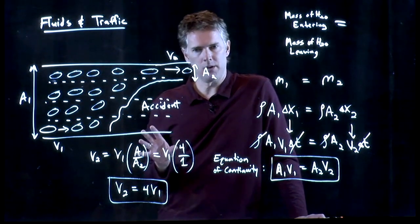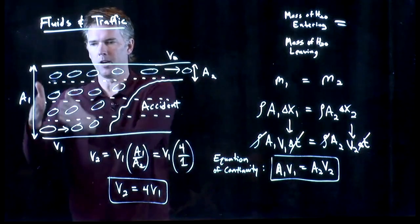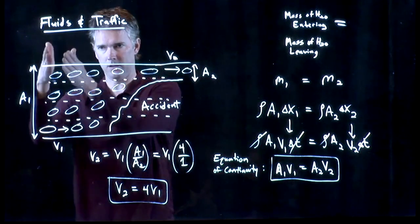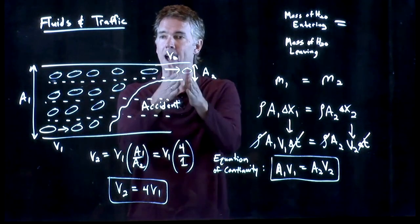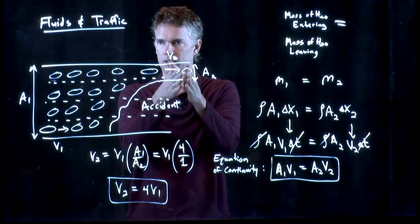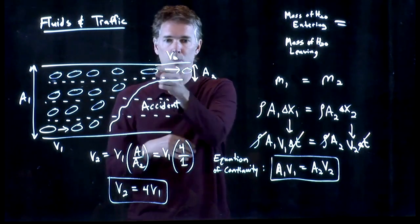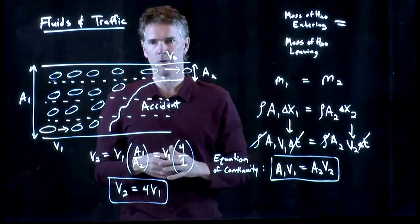Equation of continuity says number of cars that are going to pass here per second has to equal the number of cars that are going to pass here per second. And so if there's only one row, they have to be going four times as fast.